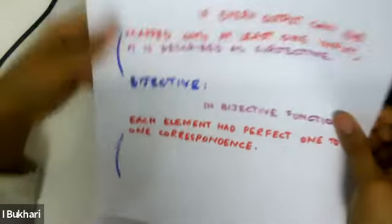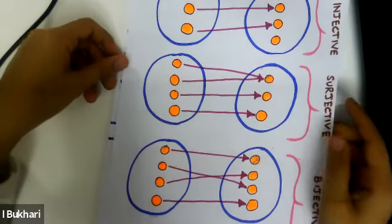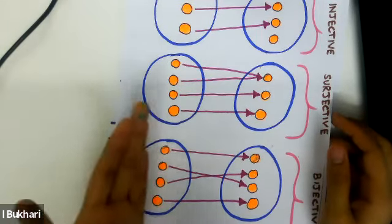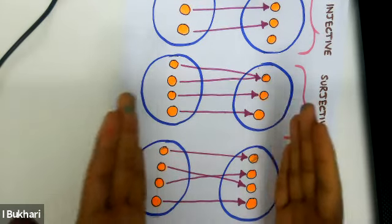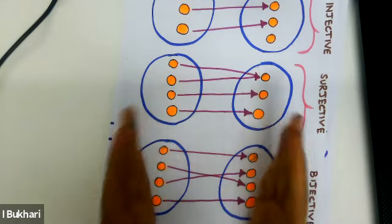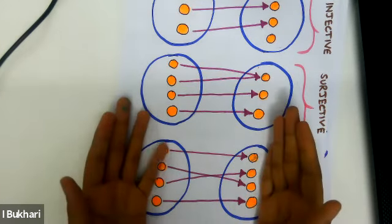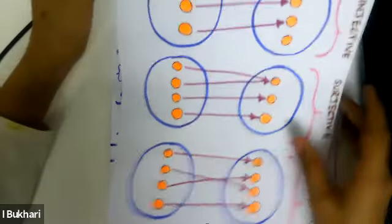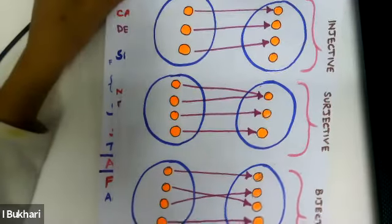Bijective, on the other hand, is a really interesting logical relationship. For each input we have one output, and this mapping takes up the whole of the output set. These are the three types of relationships in math.